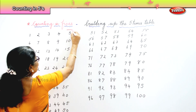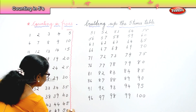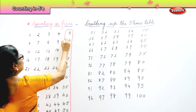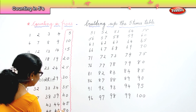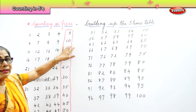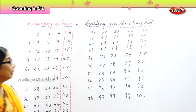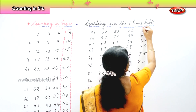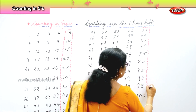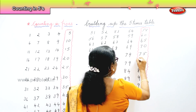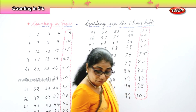Now look, I am going to box for you all the five times table. Forget about the rest of the numbers. Just look at what is in the box: five, ten, fifteen, twenty, twenty-five, thirty, thirty-five, forty, forty-five, fifty. Similarly, here I am going to box for you all the fives. Now you have automatically the magic square — the five times table — built very easily.